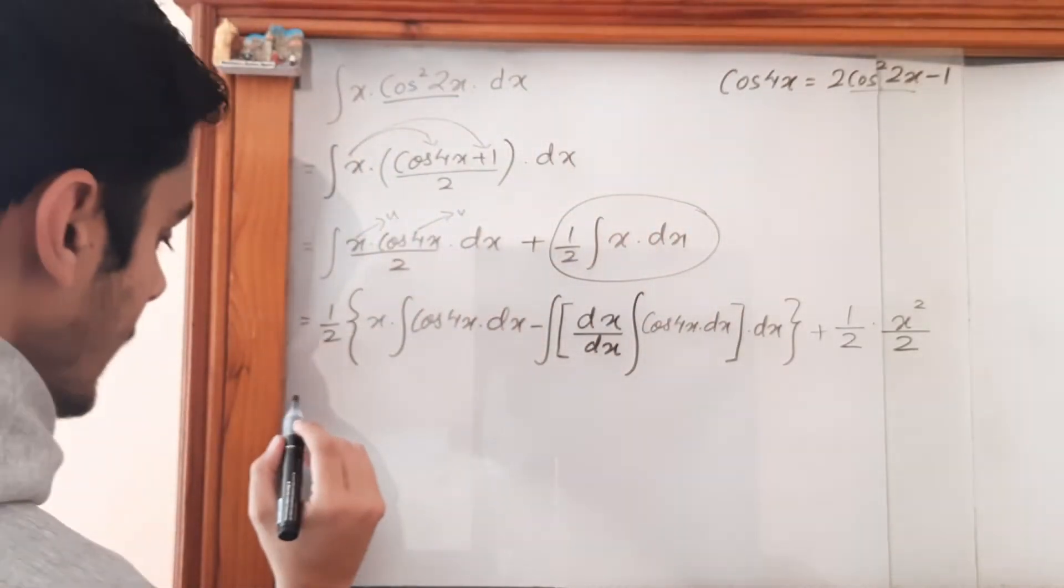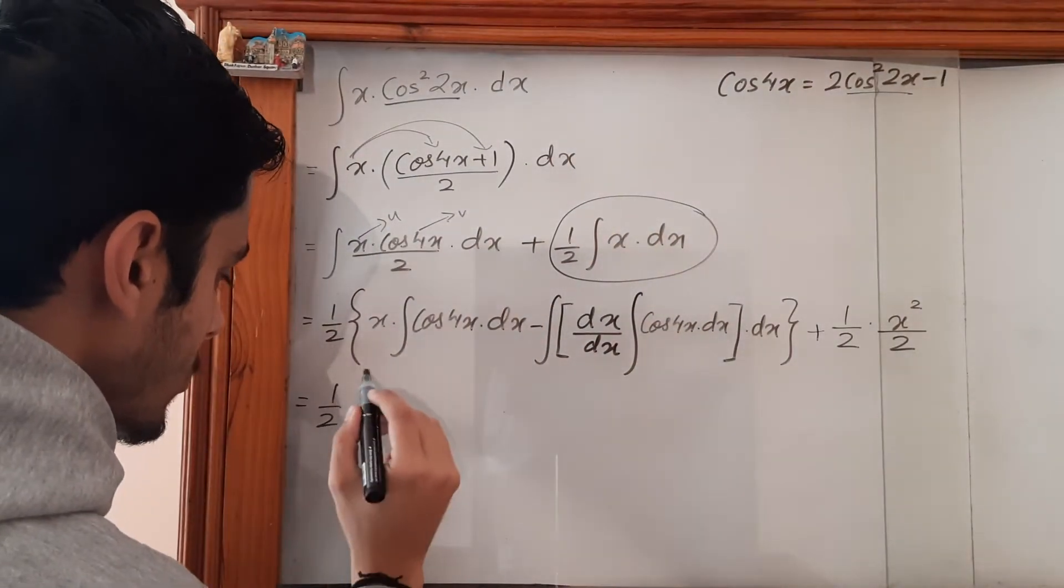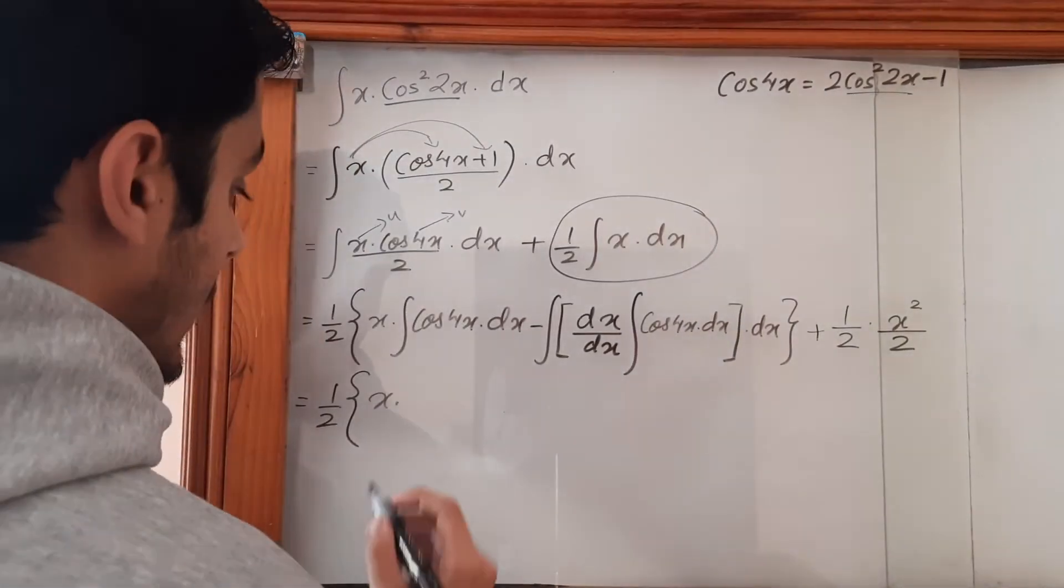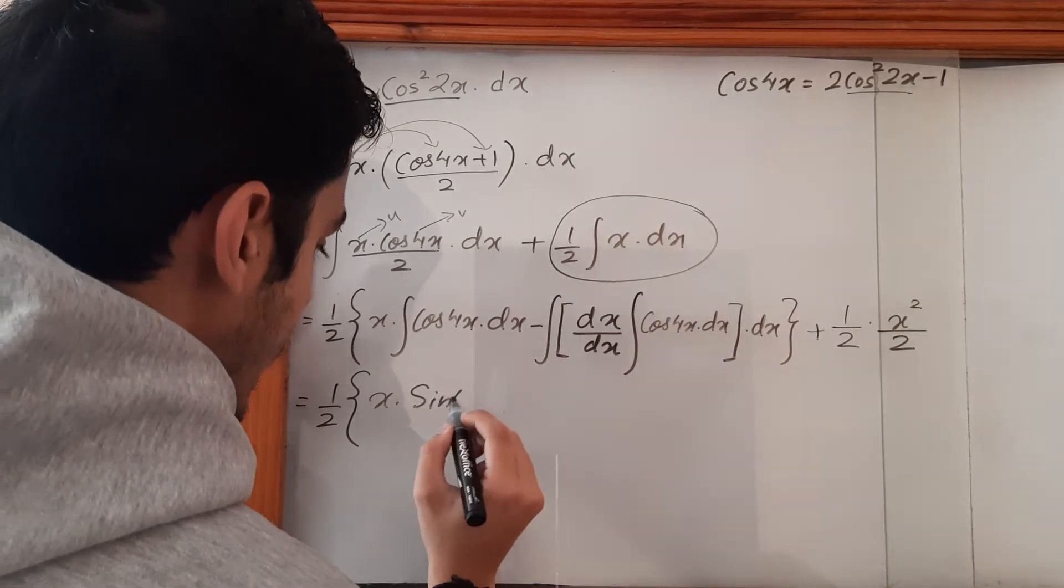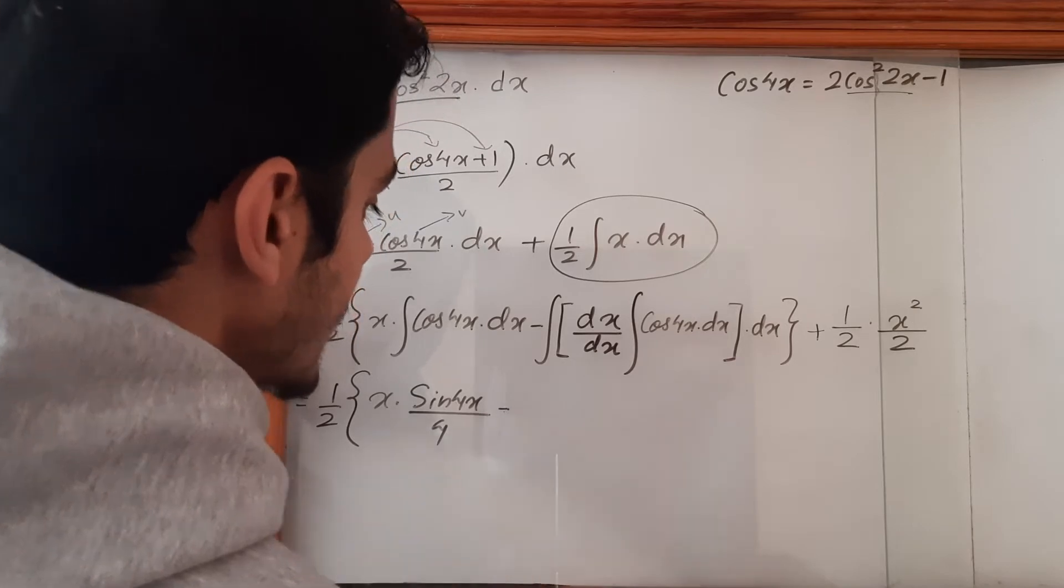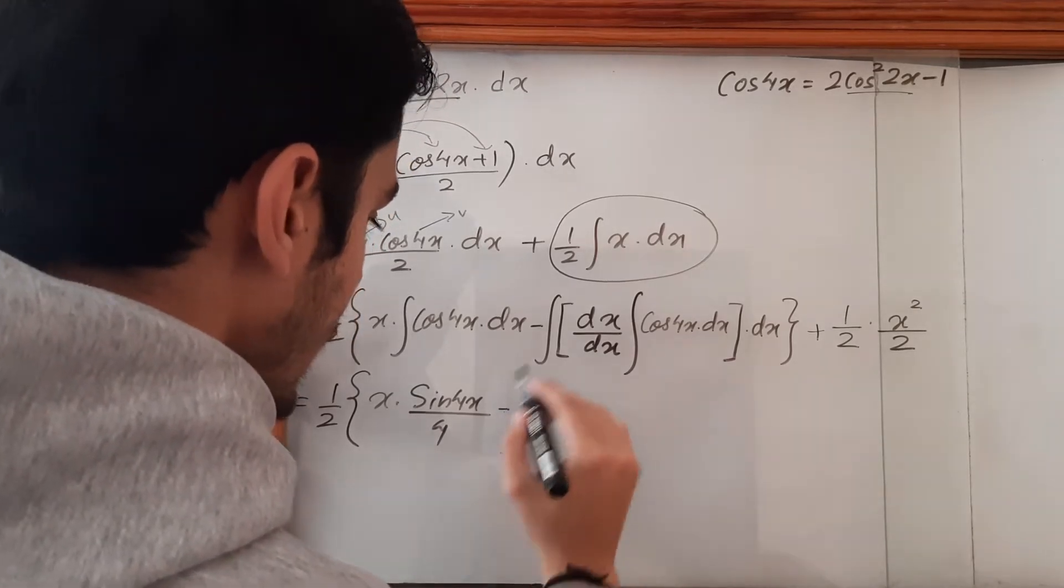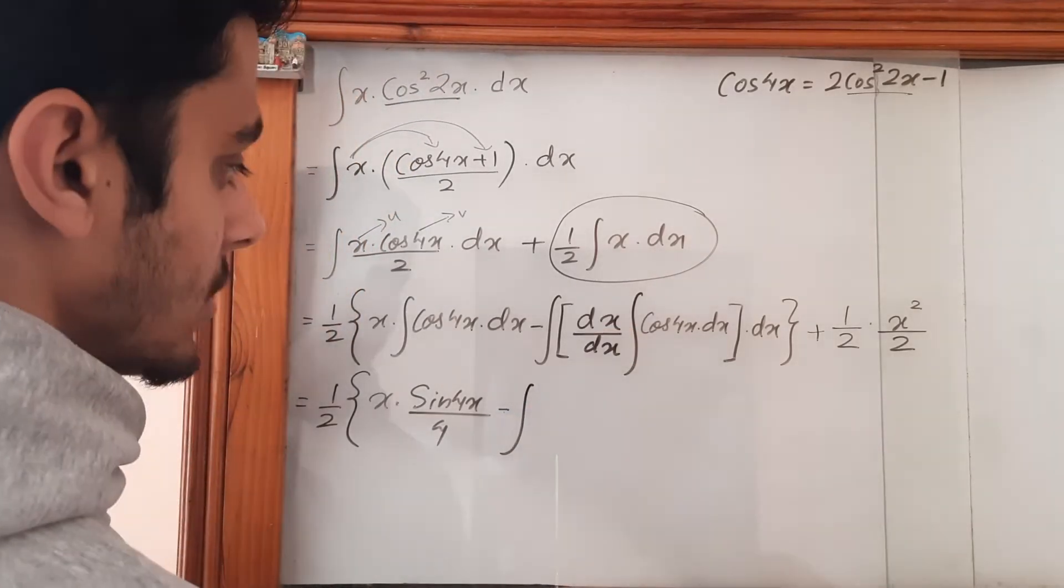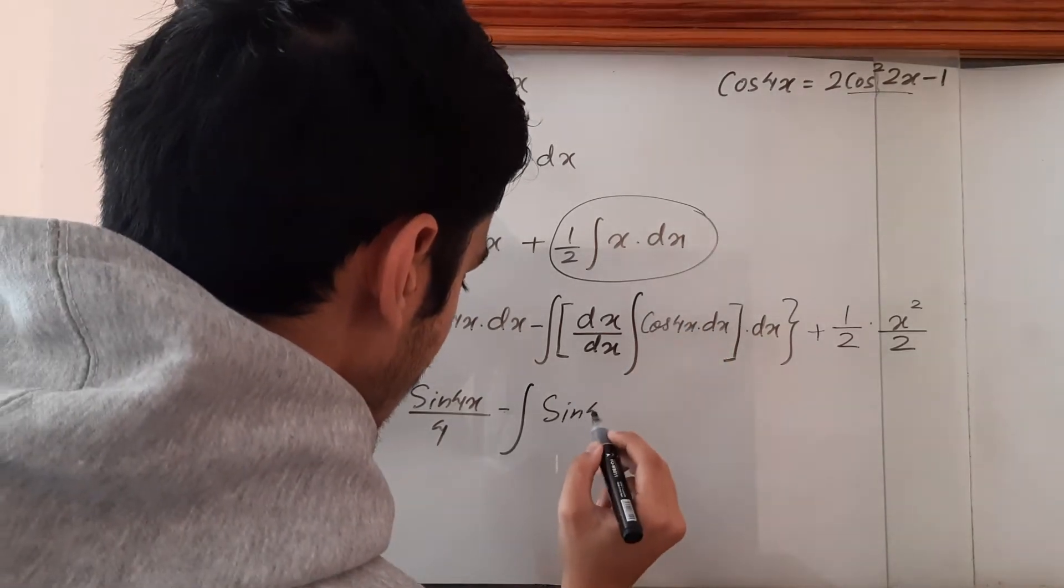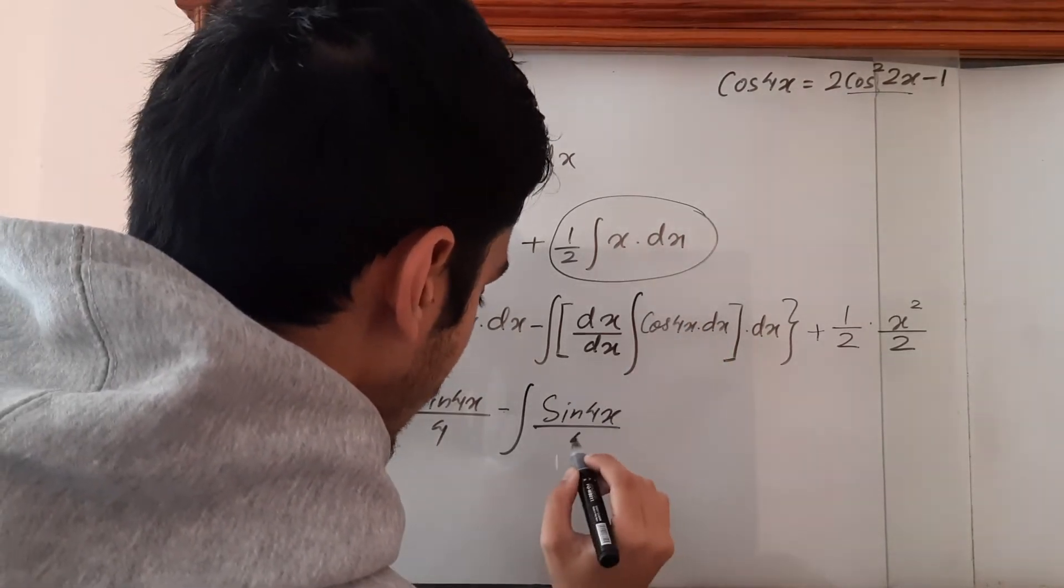So this is 1/2{x·sin(4x)/4 - ∫[1·sin(4x)/4]dx} + x²/4. The integration of cos(4x) is sin(4x)/4.